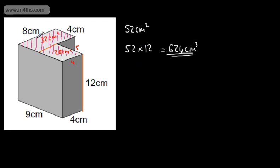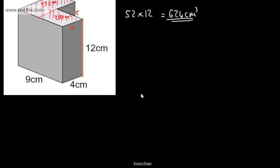Of course, you didn't have to split the top like that — you could have put the line across there, or you could have subtracted the cutaway part from a rectangle. There is a video on the area of a composite or compound shape if you want to check that out. There are lots of different ways, but what we need is the area of the cross-section. Let's look at one more example: the volume of a prism.